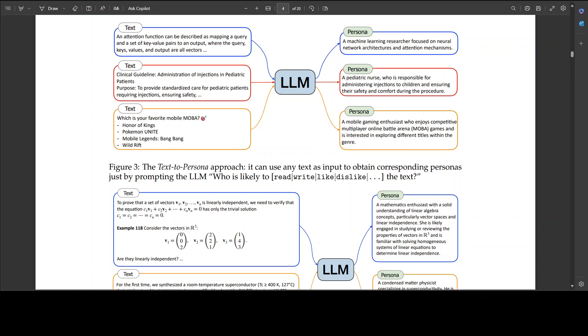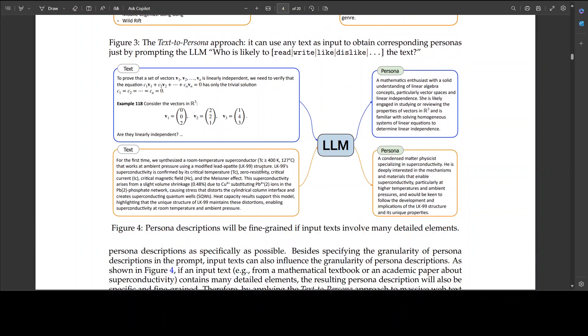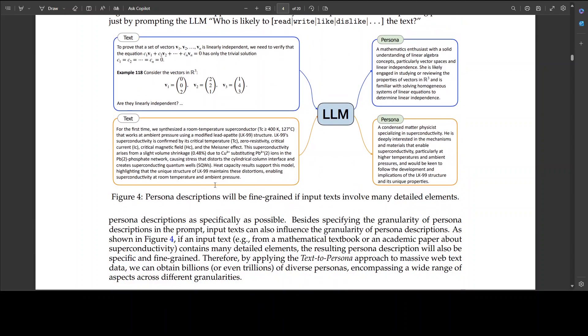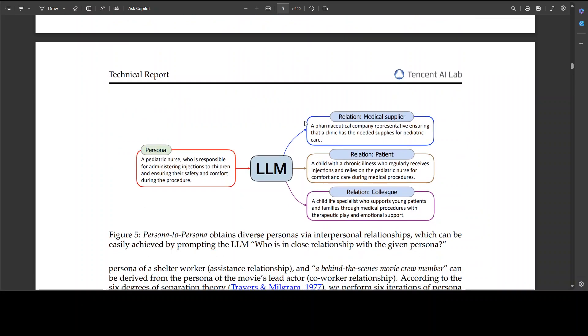Anyway, that is out of topic here. Also, if you look at this example here, primarily what is happening all in all in this one is that the text-to-person approach is being taken, and it can use any text as input to obtain corresponding persona just by prompting the LLM that who is likely to read, write, like, dislike the text. Similarly, if you scroll down, there are other examples where persona descriptions are being shown, and that will be fine-grained if input text involves many detailed elements. They have given quite a lot of examples throughout this.